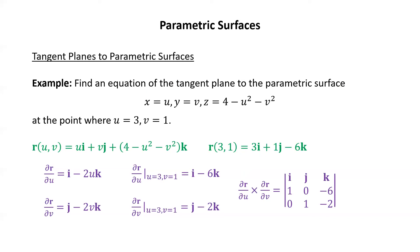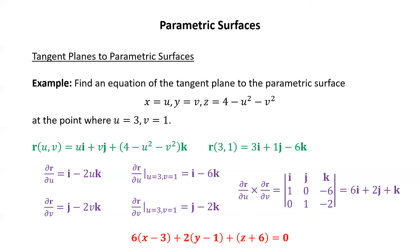We take the cross product of those two partials at u equals 3, v equals 1. In the determinant, the second row is (1, 0, -6) and the third row is (0, 1, -2), giving a cross product of 6i plus 2j plus k. Since the cross product is normal to the tangent plane, we use that together with r of (3,1) to write the equation of the plane: 6(x minus 3) plus 2(y minus 1) plus 1(z plus 6) equals 0.